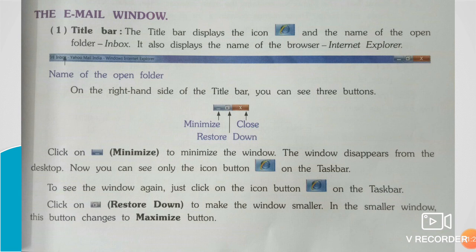Click on Minimize to minimize the window. The window disappears from the desktop. Now you can see only the icon button on the taskbar. To see the window again, just click on the icon button — Internet Explorer — on the taskbar.